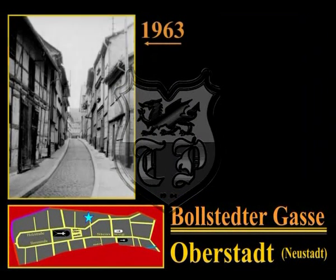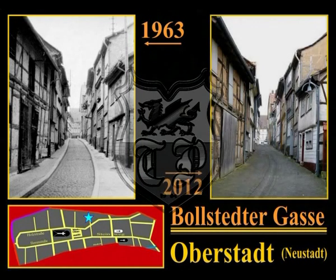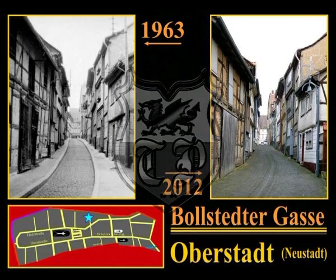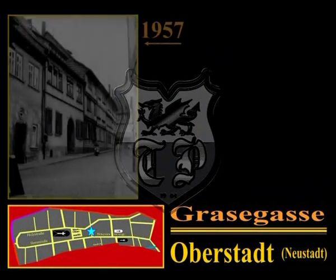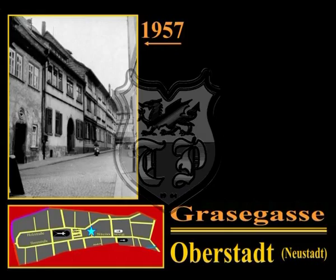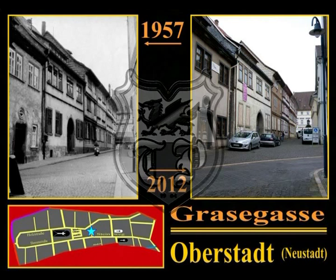Als Placea Bolkstede erstmals 1387 erwähnt, war die Bollstädter Gasse bis 1889 ebenfalls eine Sackgasse, an deren Ende ein Stadtmauerturm stand. Ob der Straßenname von dem nahe bei Mühlhausen gelegenen Ort Bolstedt herrührt oder von der Mühlhäuser Familie de Bolstede, die hier Besitz hatten, ist nicht genau geklärt. Die Grasegasse ist die Verbindung zwischen dem alten Salzmarkt und dem Steinweg. Sie wurde nach dem alten Grasmarkt, auf dem mit Heu, Gras und Hafer gehandelt wurde, benannt; 1599 taucht ihr Name erstmals in Büchern auf.